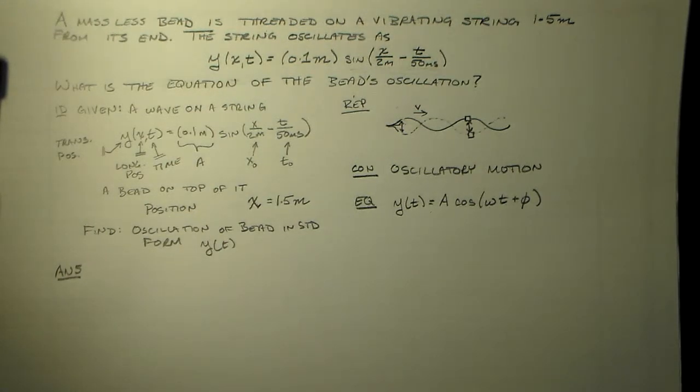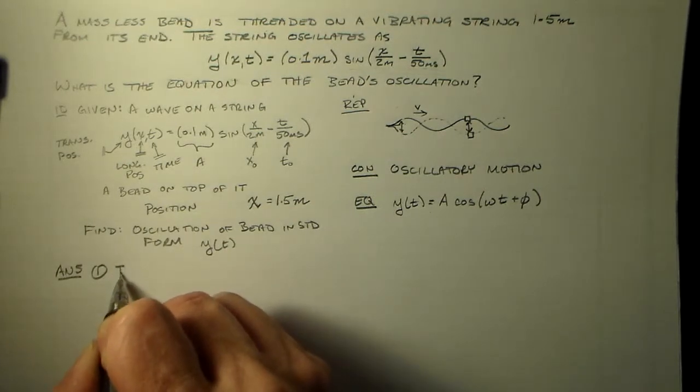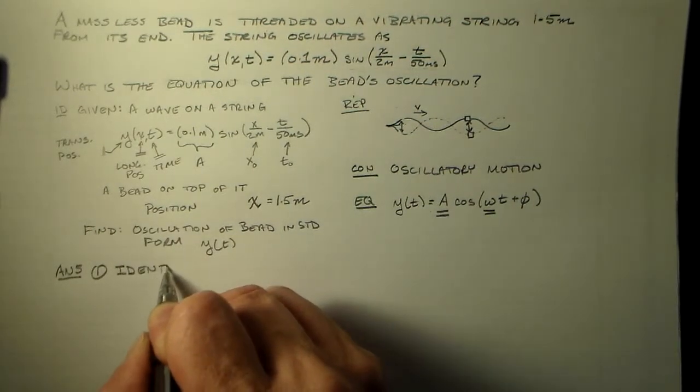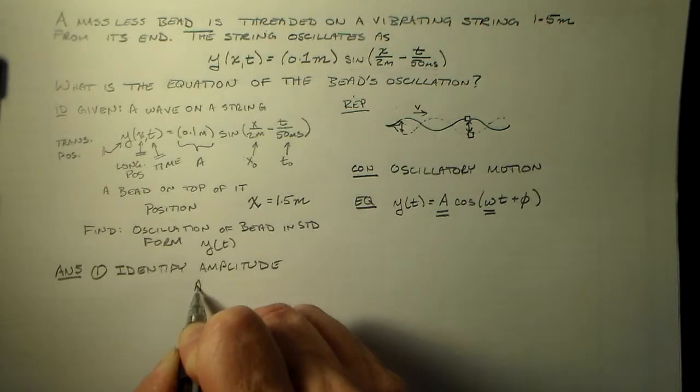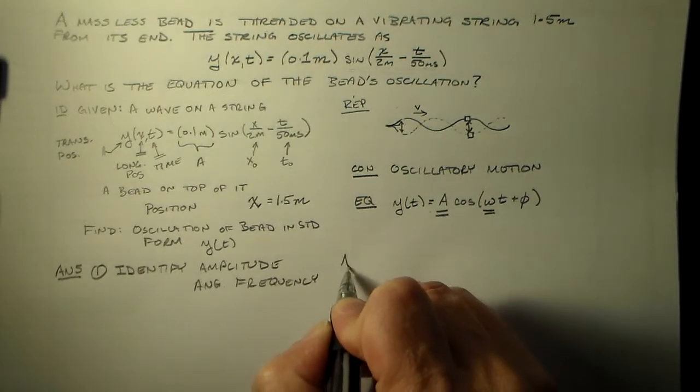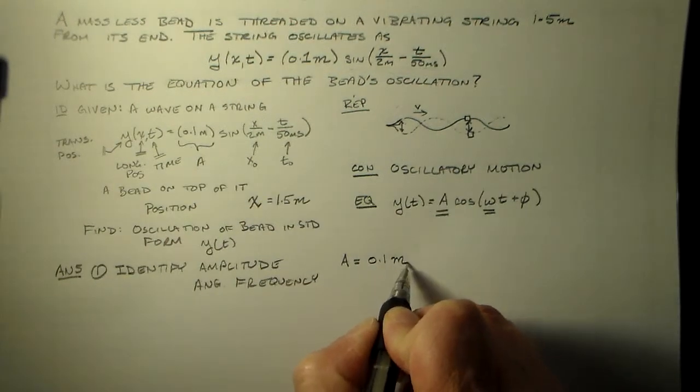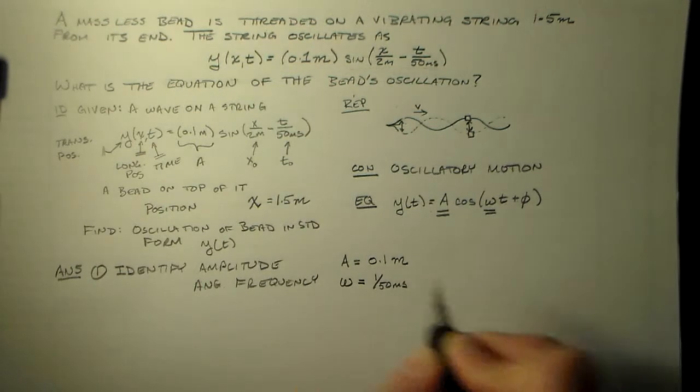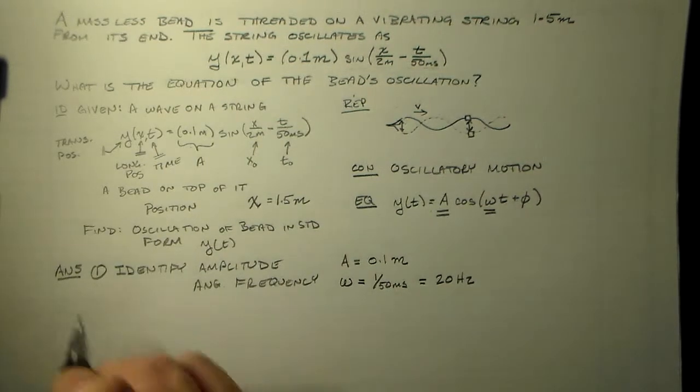So let's see what can we do to get there. First thing we can do is we can identify the amplitude A and the frequency ω. And the angular frequency. And our big A here is just this big A over here. It's just 0.1 meters. Not difficult. Omega is going to be 1 over 50 milliseconds. So 1 over 50 milliseconds is 20 hertz in my book.